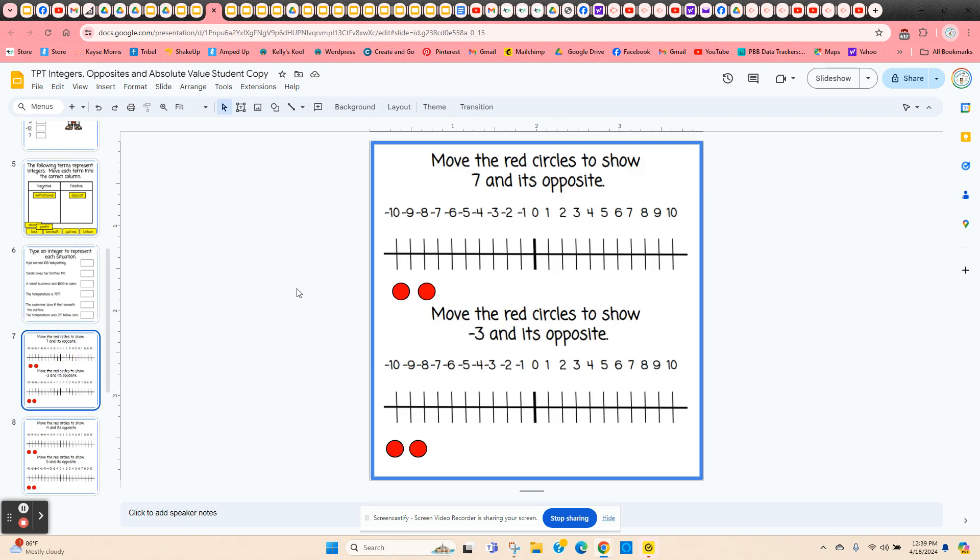Now students are going to move these red circles, so these are movable, into the correct place to show the opposite. So here they're going to show seven and its opposite. So they click and hold on the circle. They're going to place the first one at seven, and its opposite, which would be negative seven. And they've got three more to do that with.